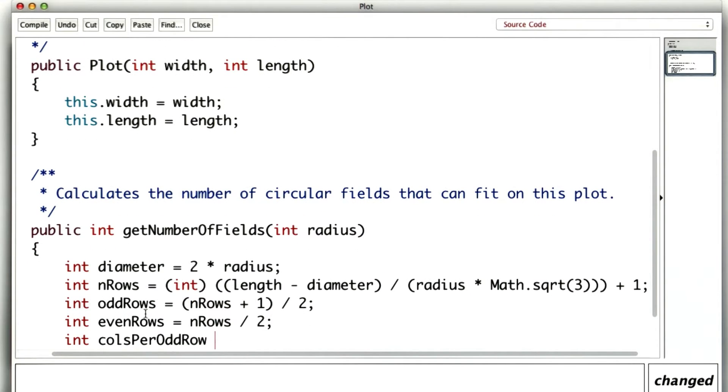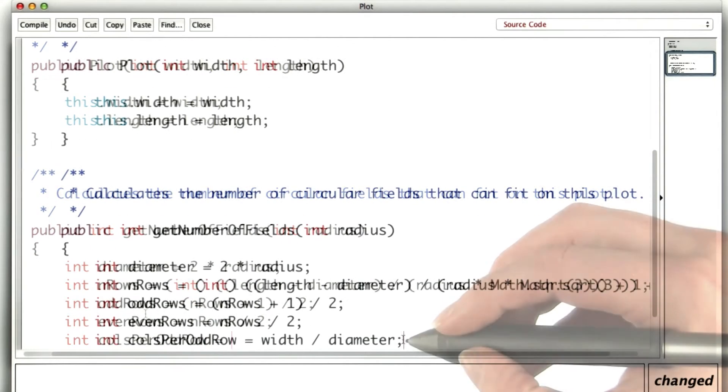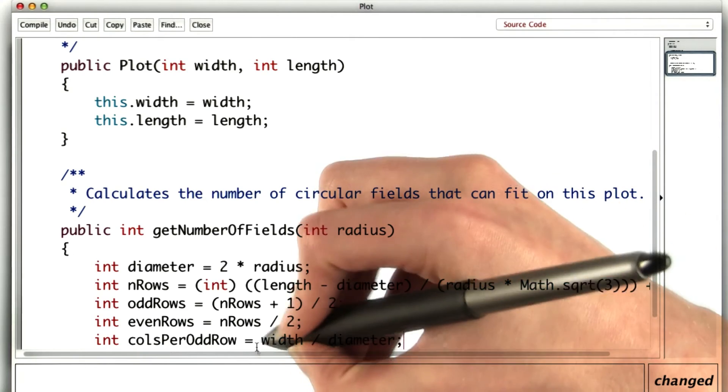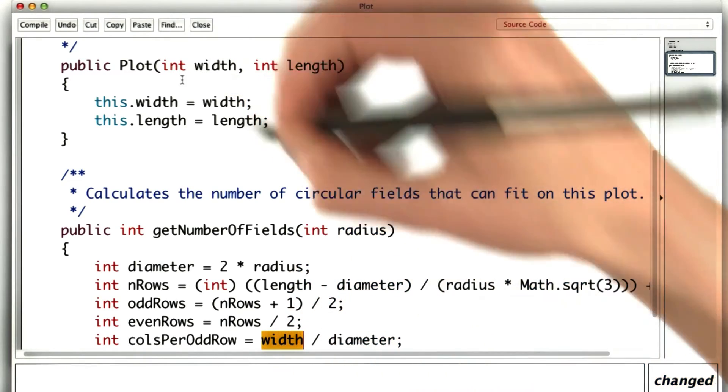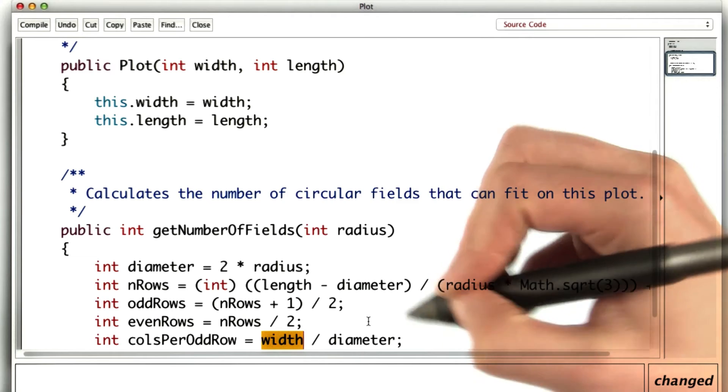The number of columns in each odd row was based on the width and the diameter. I want to make sure that I actually get an int here. So I noticed that the width is an int and the diameter is also an int. So that's good.